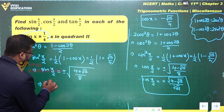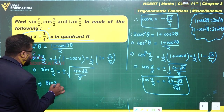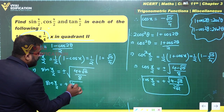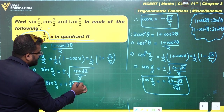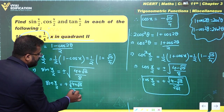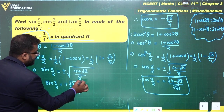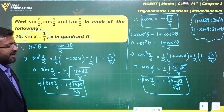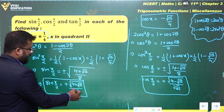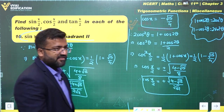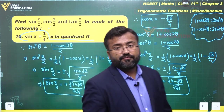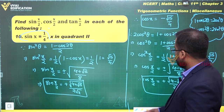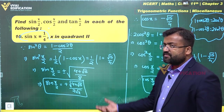Therefore sin(x/2) = √(4 + √15) / (2√2). We can multiply and divide by √2 to rationalize this denominator as well. Now cos(x/2) and sin(x/2) are both determined.